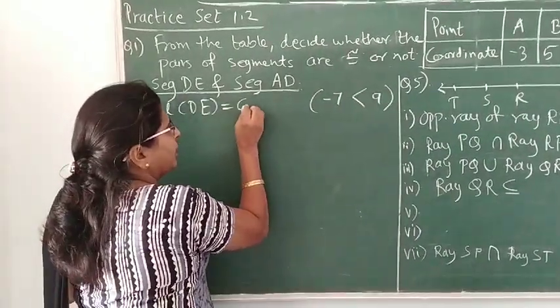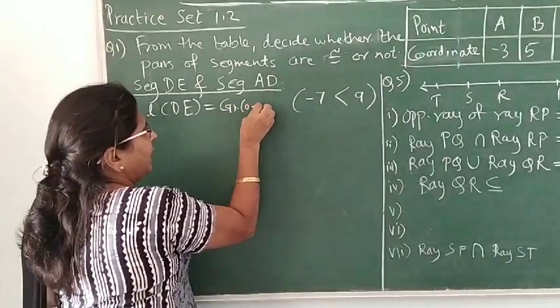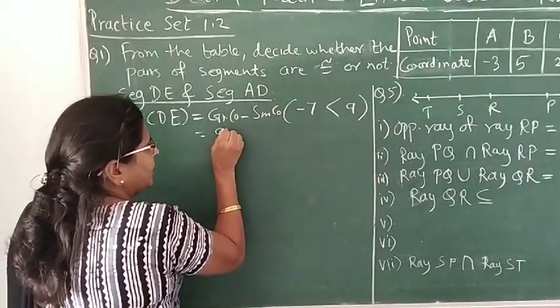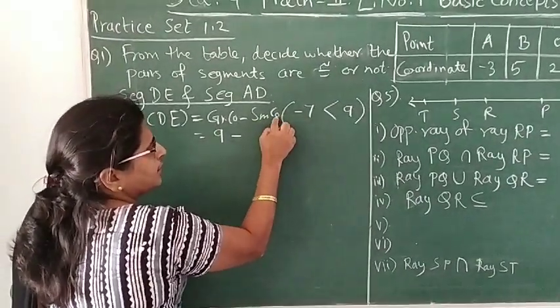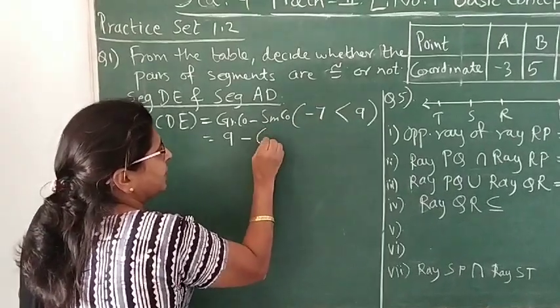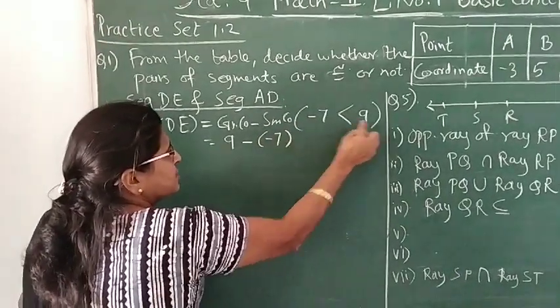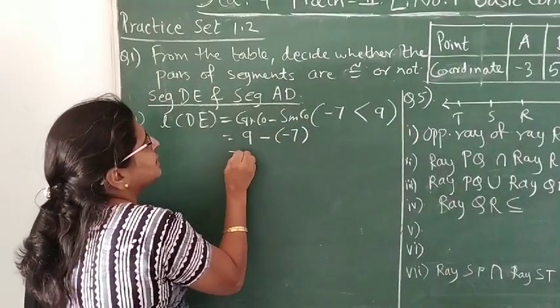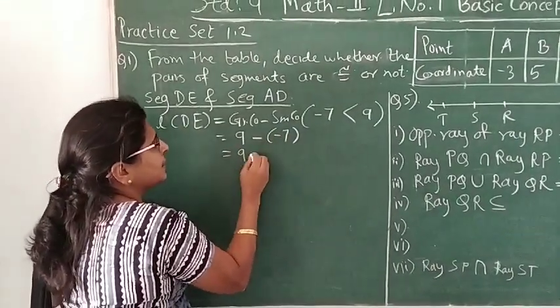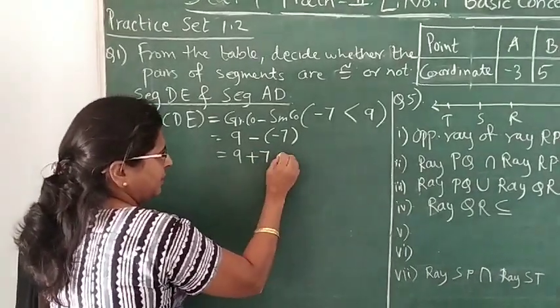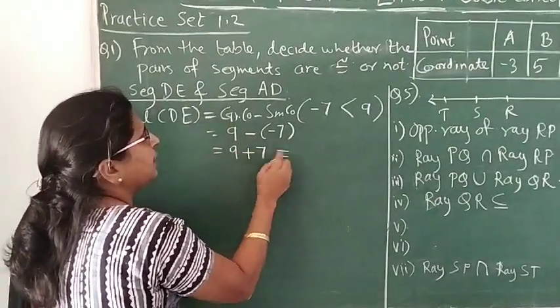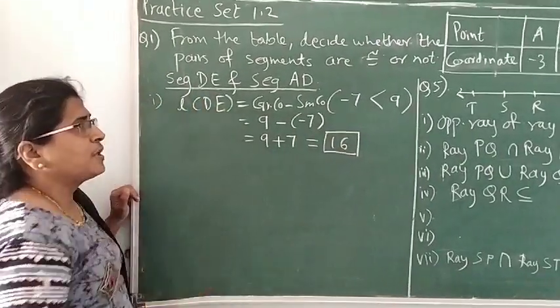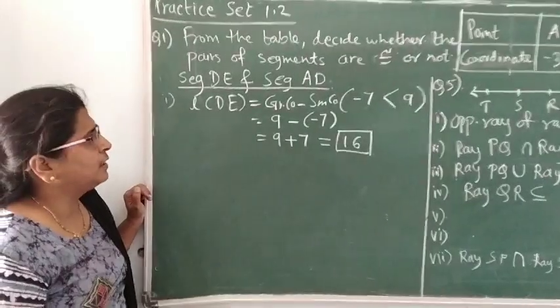From these coordinates we will find the distance. How? We will write greater coordinate minus smaller coordinate. This is the thing to remember. What is the greater coordinate? 9 minus the smaller coordinate minus 7. So 9 minus minus 7 becomes 9 plus 7. The length of DE is 9 plus 7, that is 16. This is the distance between the two endpoints and the length of segment DE.